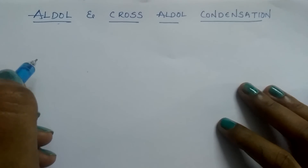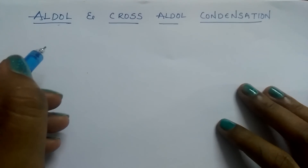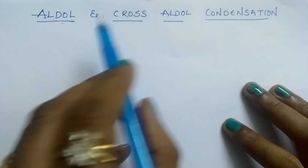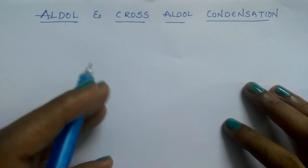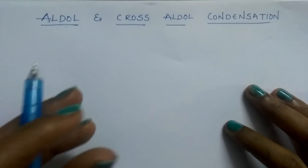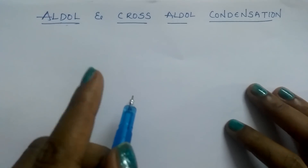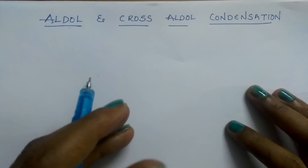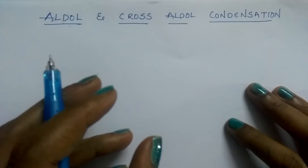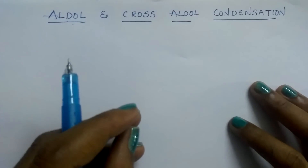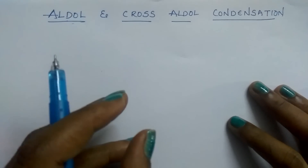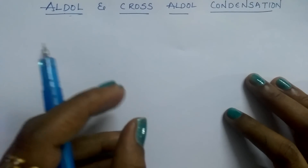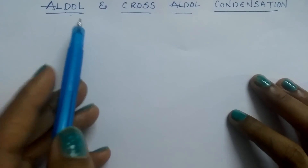Hi students, today I am going to explain you about aldol and cross aldol condensation. Generally, aldehydes and ketones having at least one alpha hydrogen undergo a reaction in the presence of dilute alkali as catalyst to form beta hydroxy aldehydes or beta hydroxy ketones — we call it as aldol condensation.